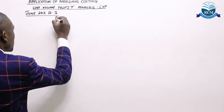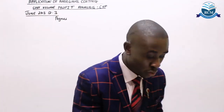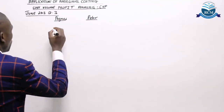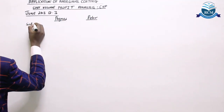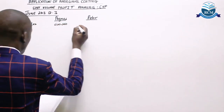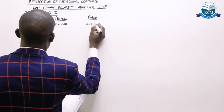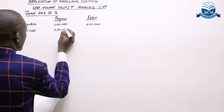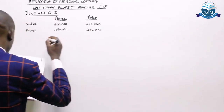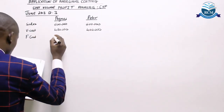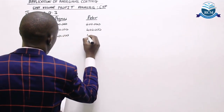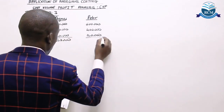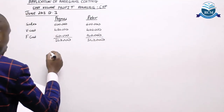So, I'm given two people: Agnes and Peter. For Agnes's business, my sales value was 600,000, and for Peter's business, my sales value was also 600,000 — the same on aspect of sales. But variable costs varied: for Agnes I'm given 480,000, and for Peter I'm given 400,000. The fixed cost for Agnes is 60,000, and for Peter it is 140,000, making totals of 540,000 and 540,000 respectively.